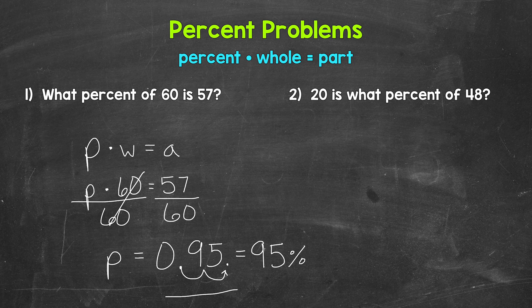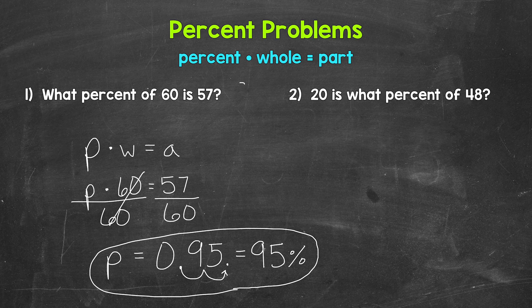So P equals 0.95, or 95 hundredths as a decimal, which we converted to 95 percent. For number one, 95 percent of 60 is 57. Whether you're using a calculator or working this out by hand, we get the same result. I do have videos where I work through these types of problems by hand — those links are in the description.